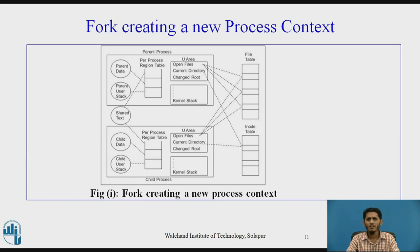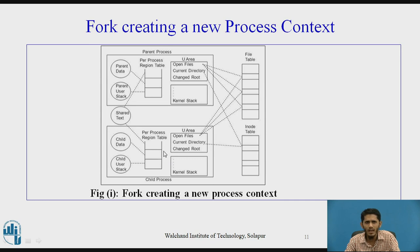Now let us see the fork creating a new process context. As we can see in the diagram, to the right we have the file table and the inode table, and to the left we have the parent process and the child process. There is some shared text between the processes. For the individual processes we have the data — in the parent process we have the parent data and the parent user stack, and similarly in the child process we have the child data and the child user stack. In both cases we have a per-process region table, and a u-area and kernel stack for both the child and the parent process. Inside the u-area we have the open files, the current directory, and the change root data.